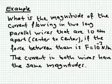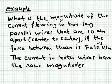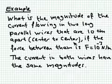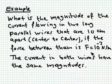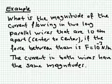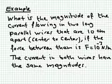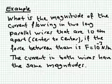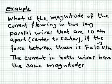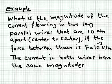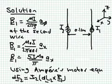Here is an example. We want to find the magnitude of the current flowing in two long parallel wires that are 10 centimeters apart center to center. The force between them is 10 to the minus 3 newtons per meter — this is force per unit length because we assume infinitely long wires and consider the force on one meter. We are not given the direction of force because we only ask for magnitude. It is assumed that both wires carry the same magnitude of current.